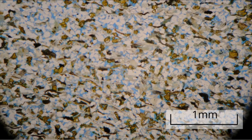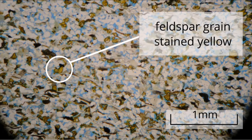Grains are of different types. In plain polarised light, most grains are colourless or brown in colour, but there is another grain which is yellow. This yellow colour was produced when the thin section was placed in a sodium cobaltinitrite solution which stained grains of potassium rich feldspar or K feldspar yellow.